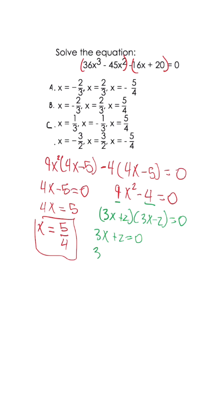Our first x is negative 2/3. Then we'll repeat the process for 3x minus 2, and we get x equals positive 2/3.